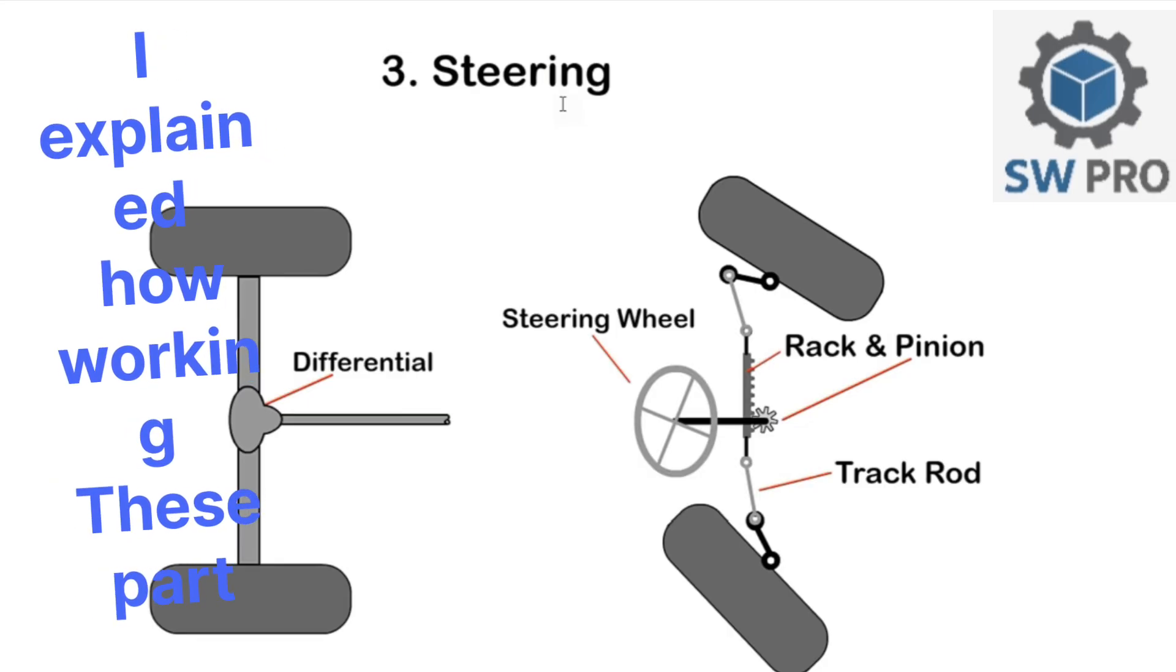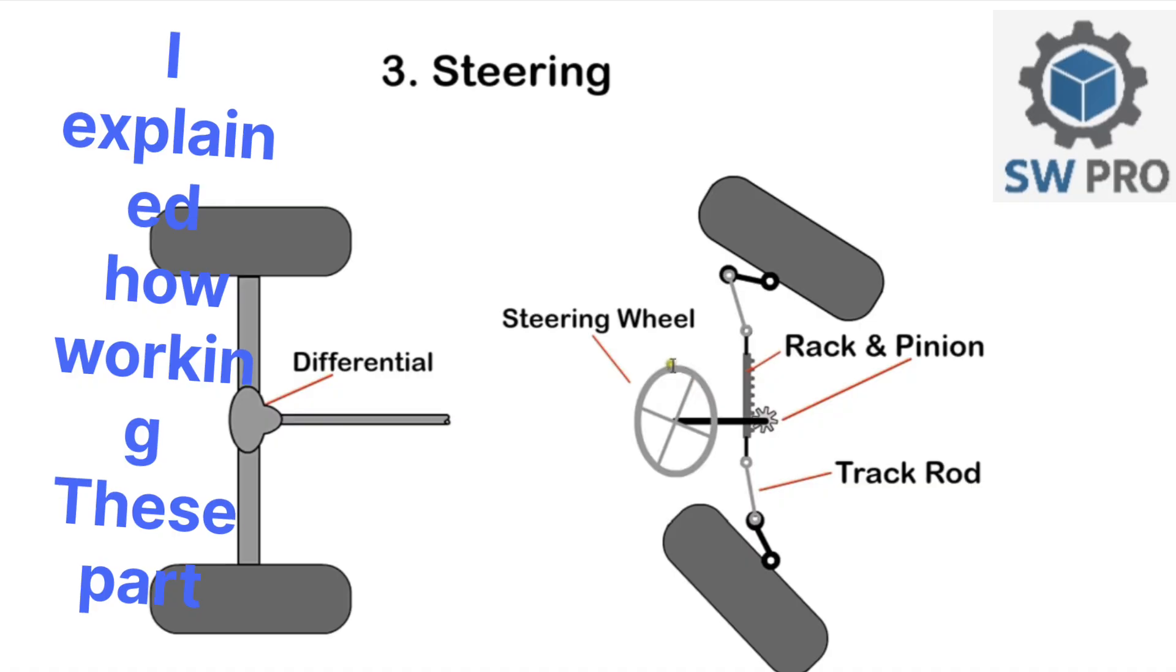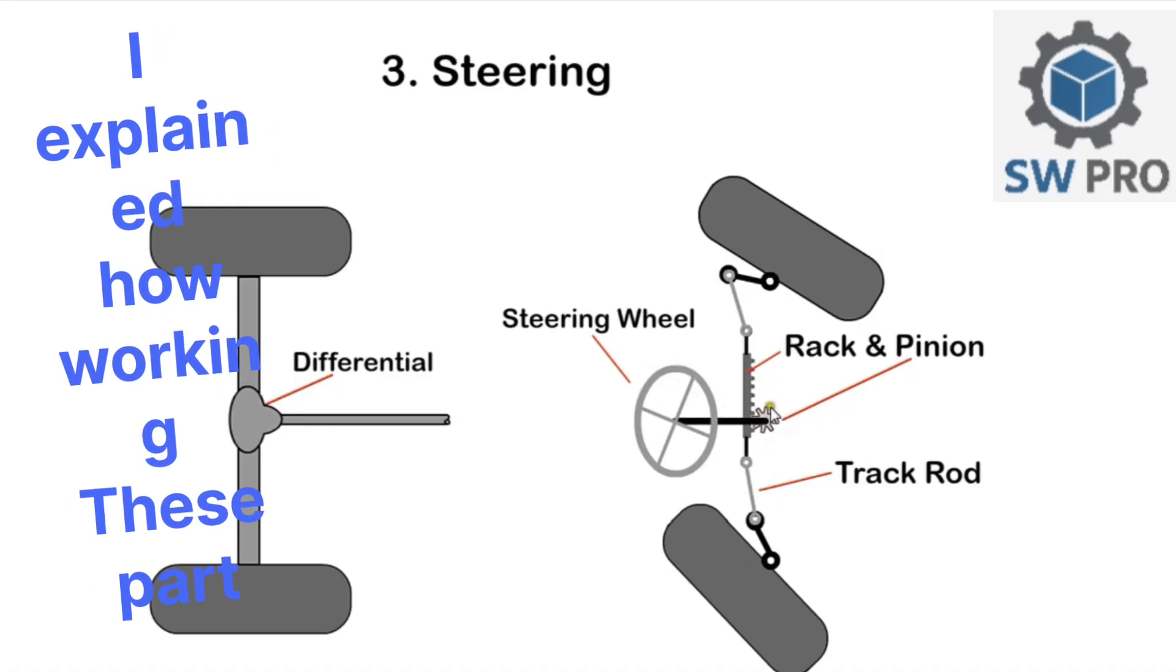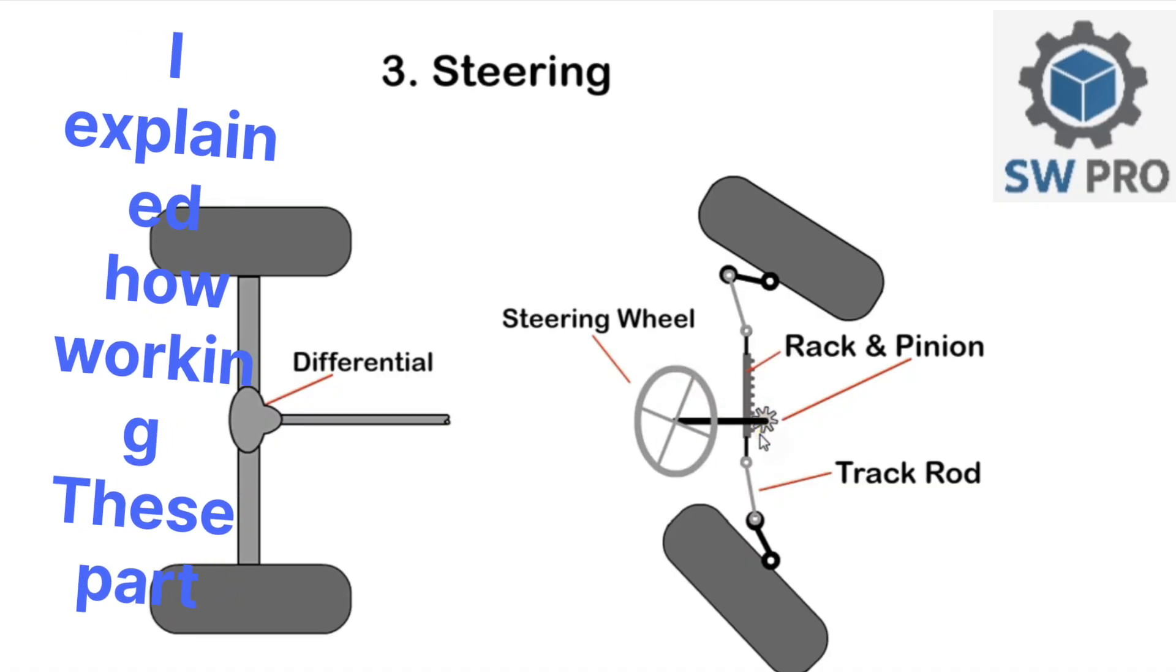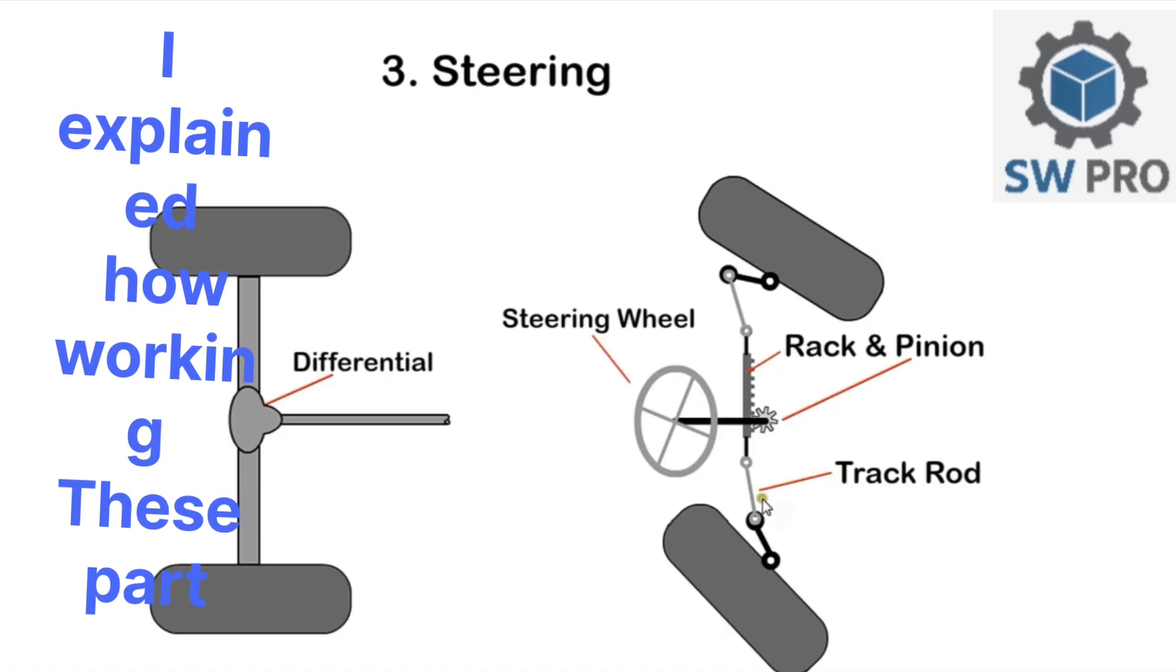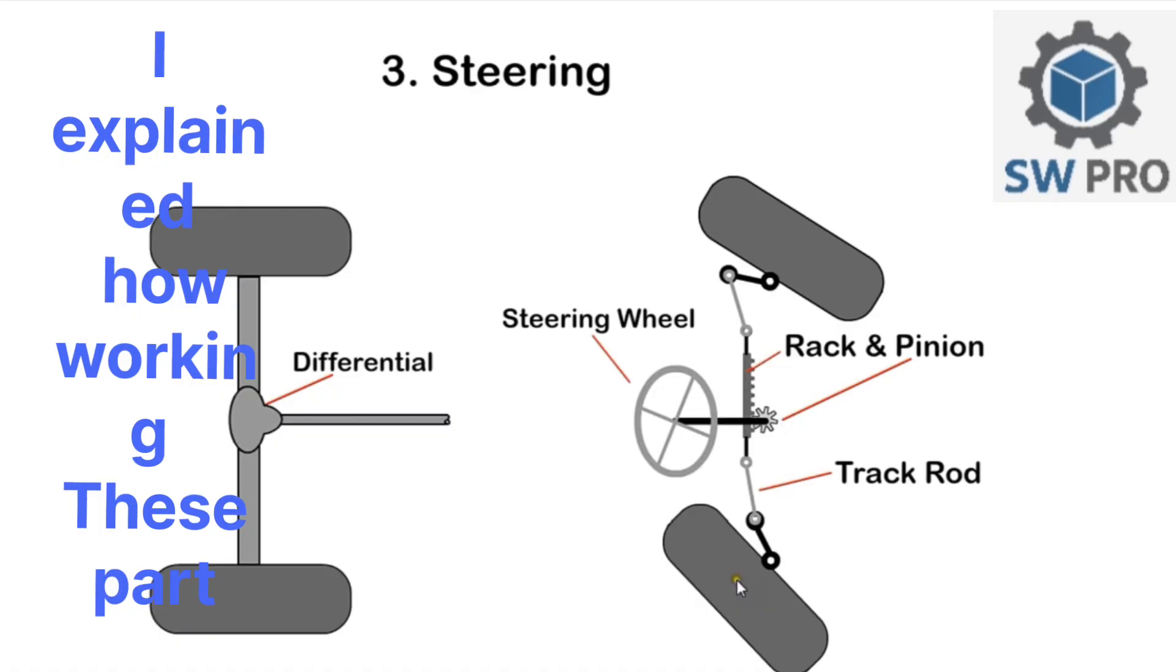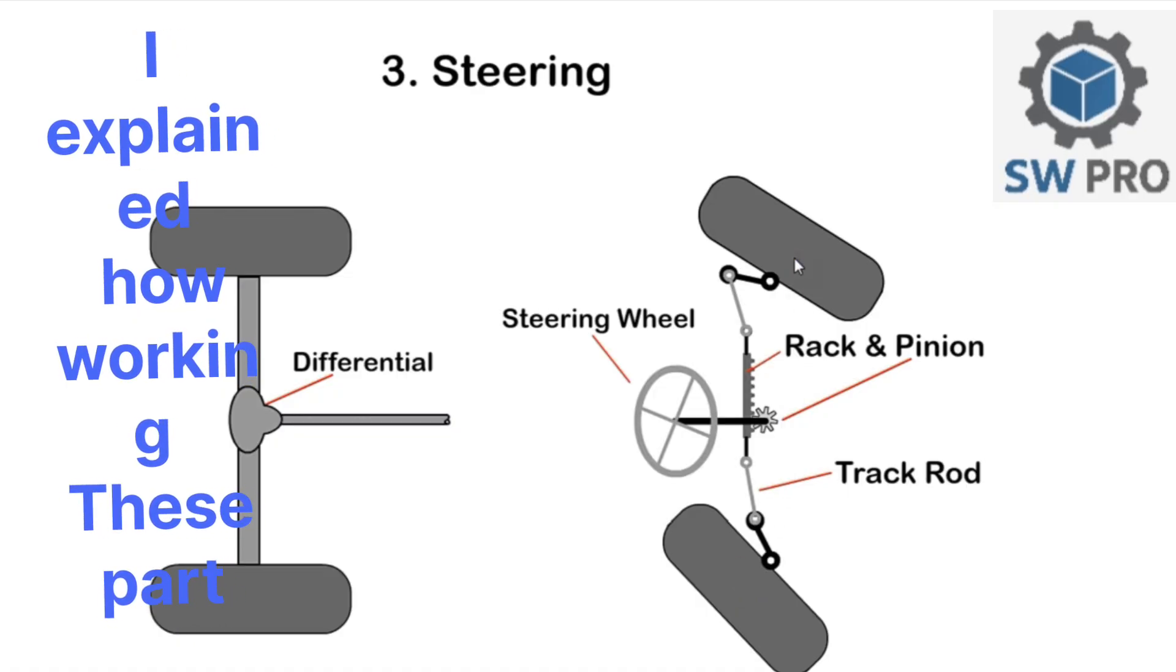Chapter three: steering system. The steering wheel is connected to the rack and pinion, which converts steering wheel rotational movement to lateral movement. The final connection to the wheels is made with the track rod and track arms. We see that the inside wheel must turn in a smaller radius than the outside wheel.